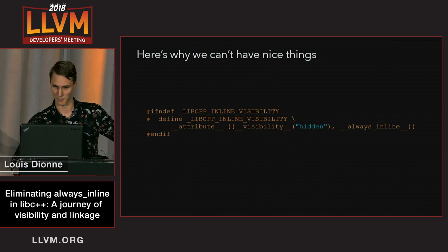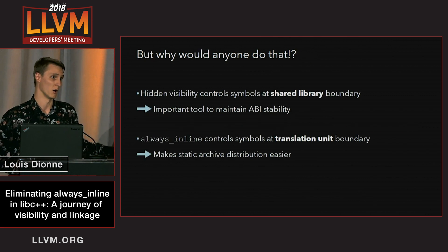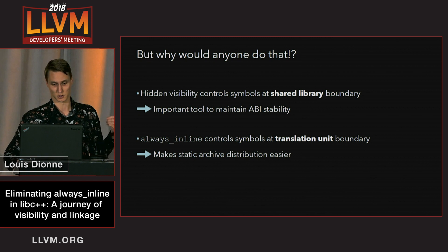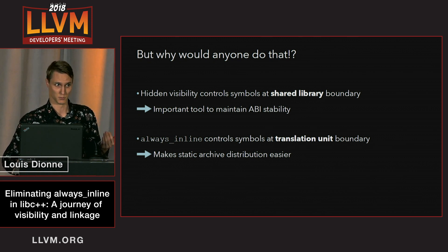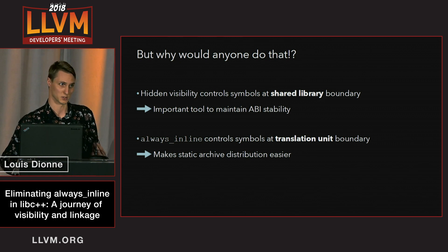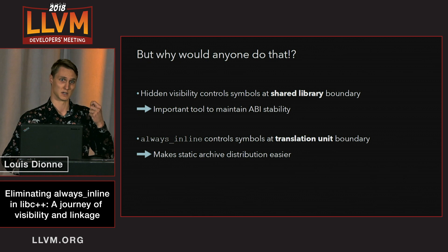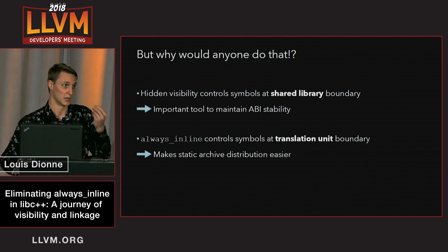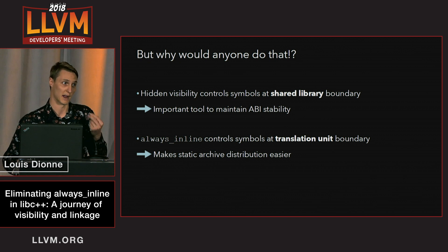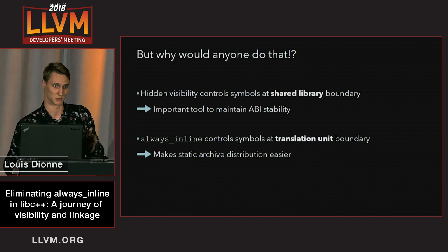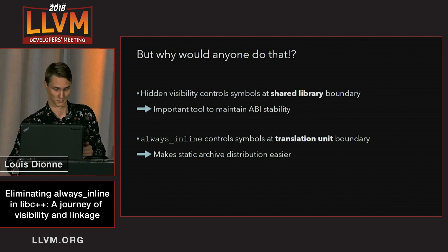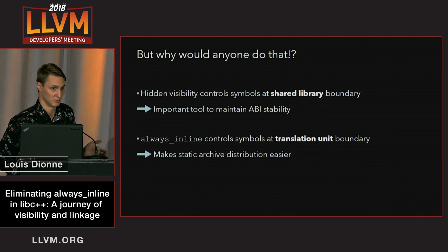That's bad, but there's a good reason for doing that. On the one hand, we use hidden visibility to control what symbols appear on the ABI boundary of libc++. That's super important because we need to be ABI stable. Whenever we introduce a new symbol, it needs to be there forever, so we mark most symbols as hidden so they don't appear on the dylib boundary.